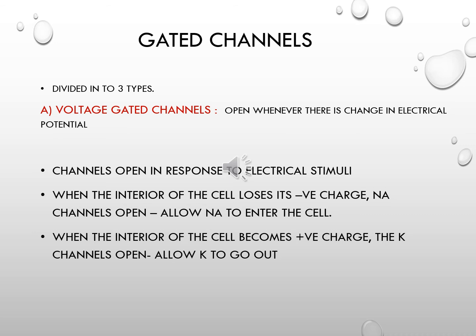When the potential inside the cell increases and reaches a positive value, the voltage-gated potassium channels open and allow potassium ions to go out of the cell into the extracellular fluid. So when the voltage increases and the negative charge reduces from minus 90 millivolts toward minus 75 or minus 70 millivolts, sodium channels open allowing sodium ion entry. Then as negativity keeps decreasing toward a positive value, the voltage-gated potassium channels open allowing potassium ions to move out into the extracellular fluid.